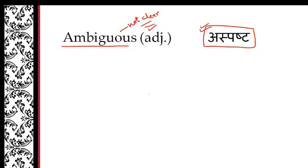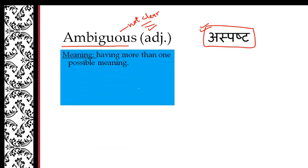Let's see its meaning in English. Having more than one possible meaning. So we can say that it is ambiguous, right? We will also call it a common meaning.